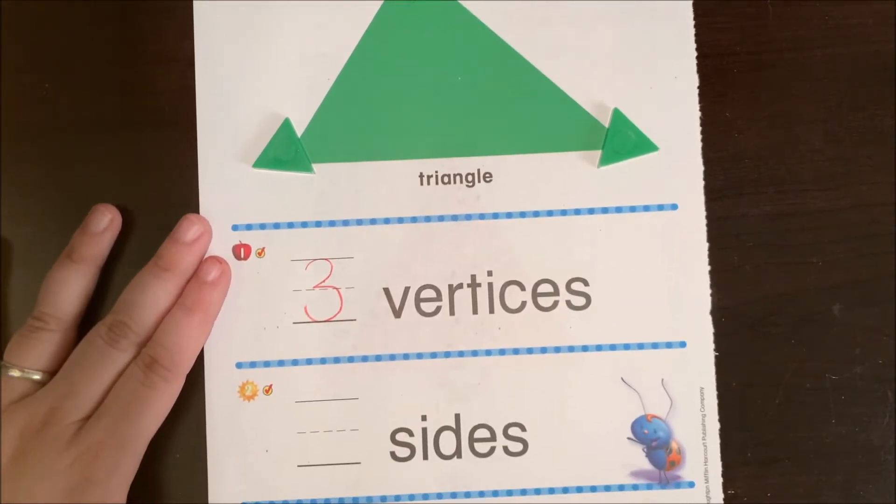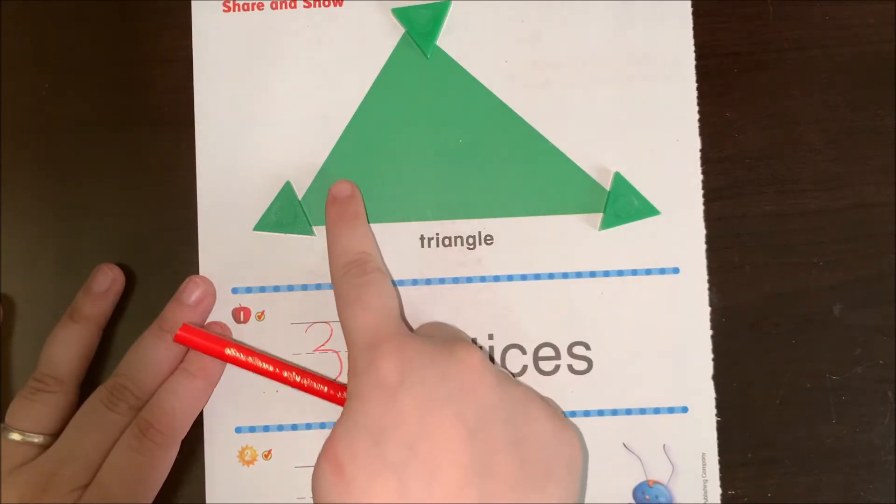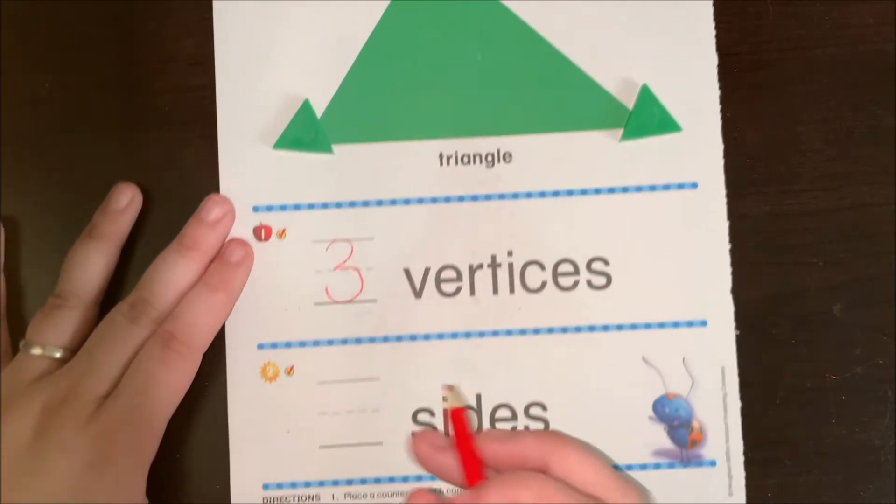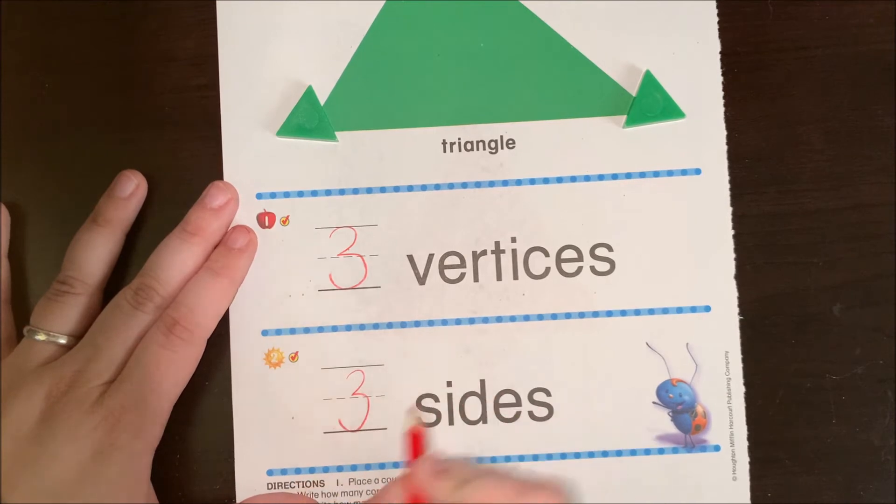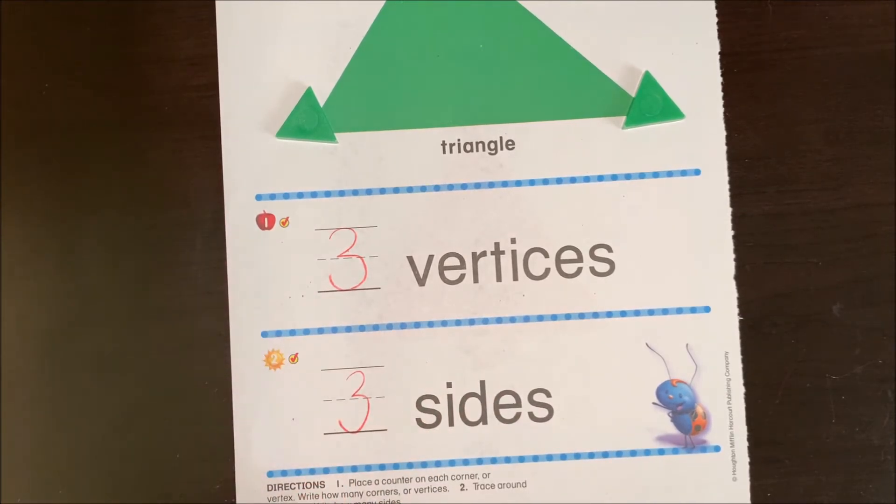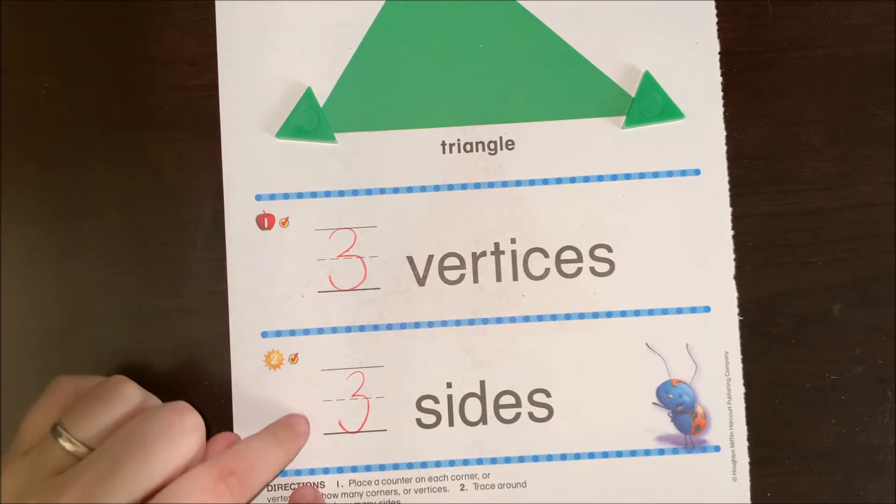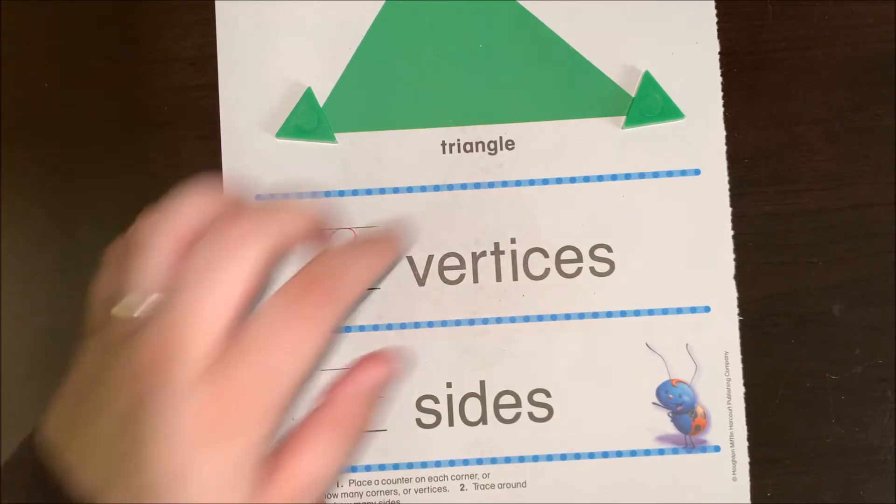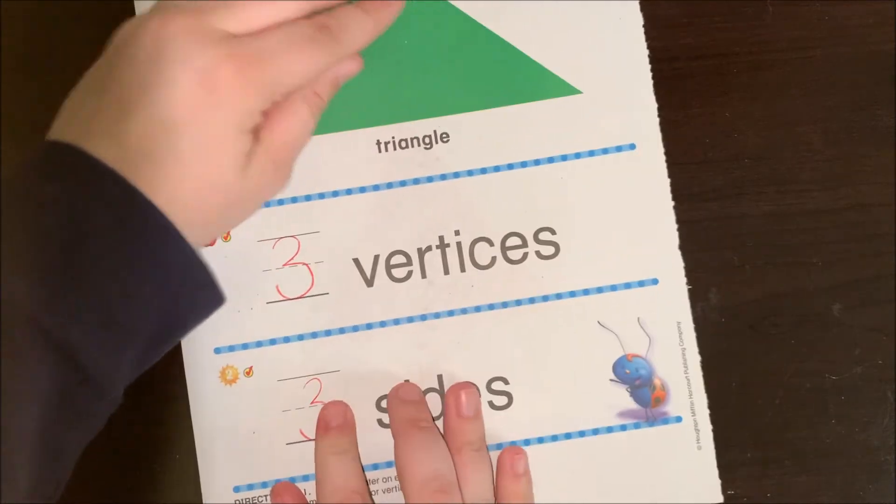Three vertices. And I have one, two, three sides. What do you notice about the number of vertices and the number of sides? Yeah, they're the same. Just like it was with our square. Very interesting.